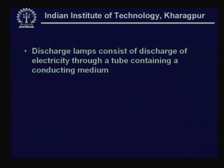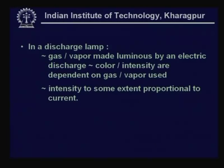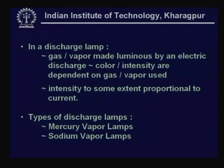Discharge lamps consist essentially of a discharge of electricity through a tube containing a conducting medium. Types depend on electron emission - this could be based on electric field causing field emission in a cold cathode type, or thermionic emission where a heated filament causes the cathode to emit electrons at higher temperature. In essence, a discharge lamp has a gas or vapour made luminous by electric discharge whose colour and intensity depend on the gas or vapour used, and intensity is proportional to current. The arc is a constant current phenomenon, therefore additional accessories are required.